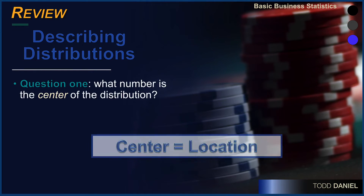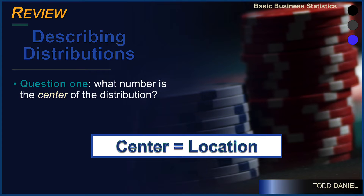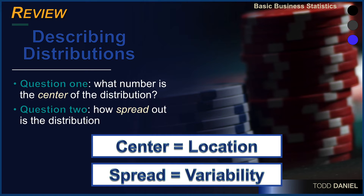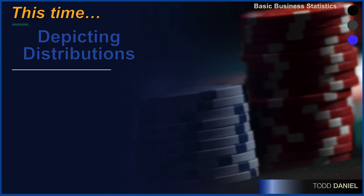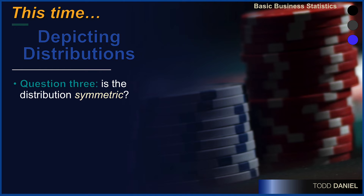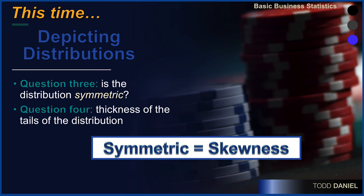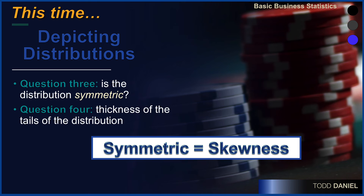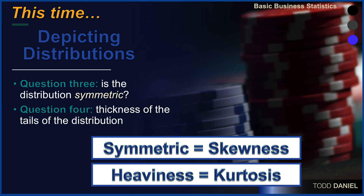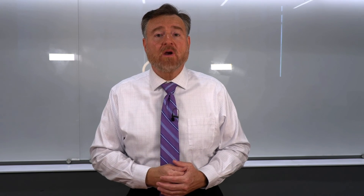In a previous video I mentioned that when you have any distribution there are four questions we want to ask. First: where is the center of the distribution — what measure of central tendency best defines it? Second: how close together or spread out are the scores — which measure of variability best describes this distribution? Third: is the distribution symmetric — does the left half look like the right half? And fourth: what is the thickness of the tails? The question of symmetry will be answered with our measure of skewness, and the question about the heaviness of the tails will be answered with kurtosis. Skewness and kurtosis are what we're going to talk about next.